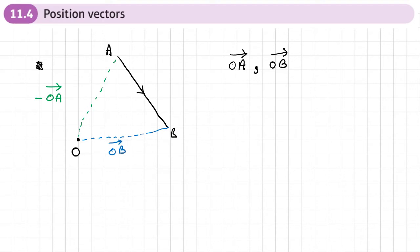So to get from A to B, what I need to do is to do negative OA plus OB. Now, we could just swap them around and write this as OB minus OA.